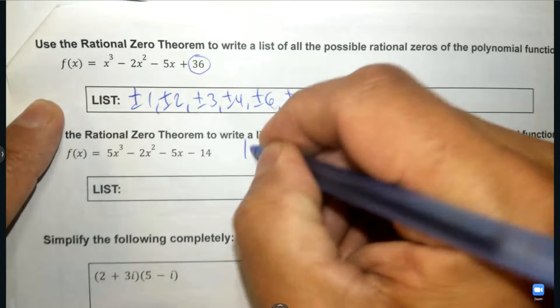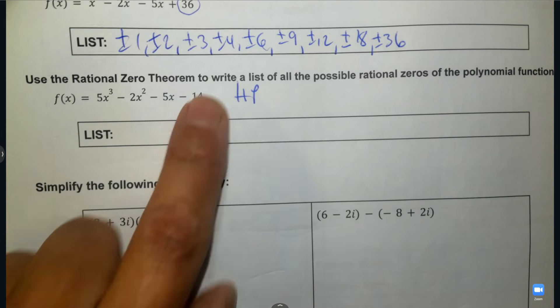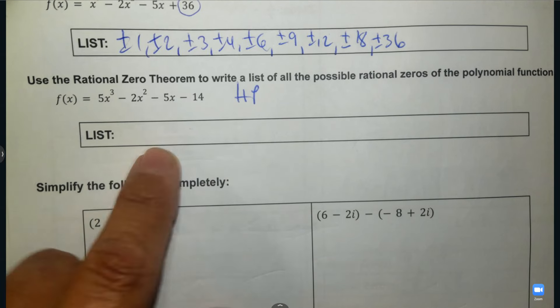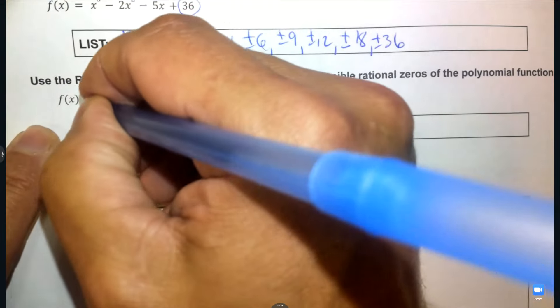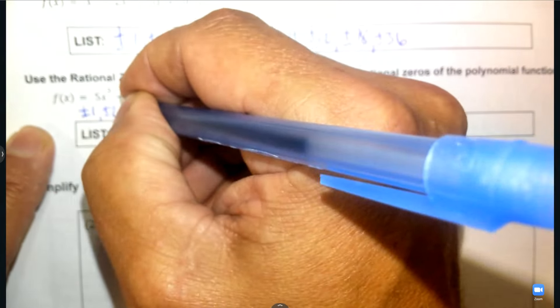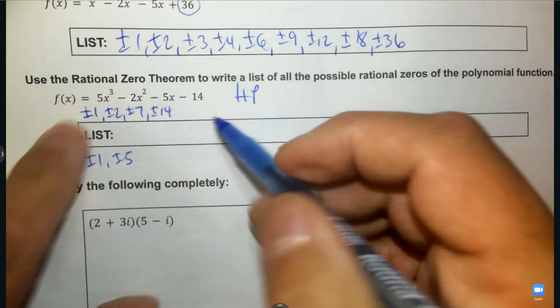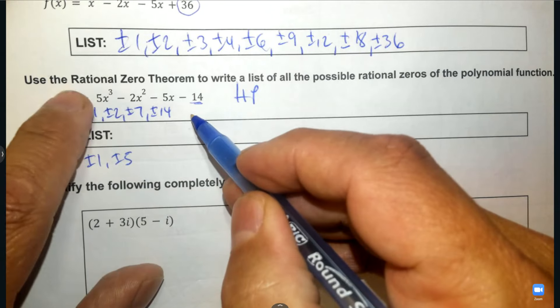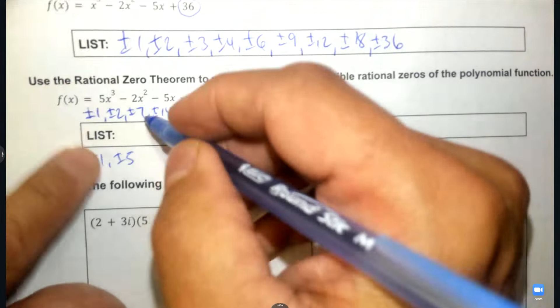Now this one is for my HP students. Can you create a list where you have a leading coefficient? We're going to put them above and below. Above, all the numbers that go into 14. Then underneath, all the numbers that go into 5.